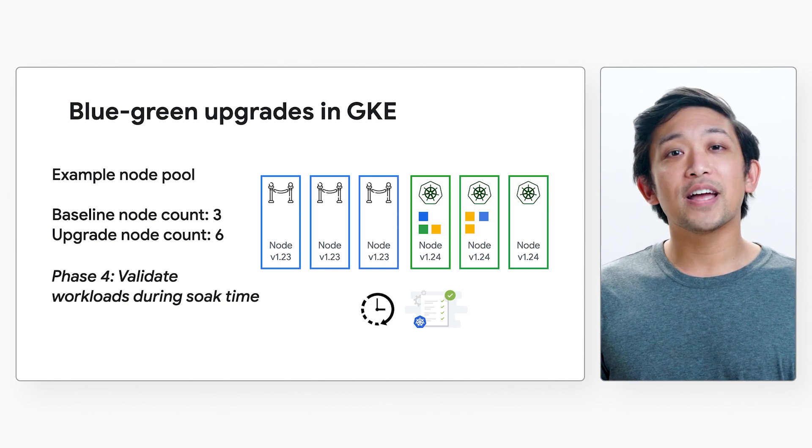Blue-green upgrades optimize for stability, availability, and risk mitigation — resources remain available to roll back to as you validate workloads on the new nodes. The trade-off is the additional cost of doubling your node pool resources during the upgrade. Many will evaluate the cost of a slower rollback process for critical workloads and factor that in as well. Surge upgrades are better for workloads where speed is more important at the cost of some disruption. Blue-green upgrades are better for workloads focused on stability, availability, and risk mitigation at the cost of running more nodes during the upgrade. The best part is these strategies are on a per-node-pool basis — GKE understands your cluster may have multiple profiles of workloads across different node pools, so you can choose upgrade strategies accordingly.